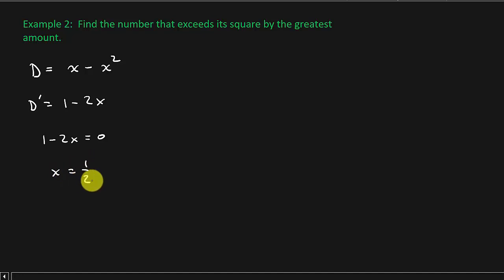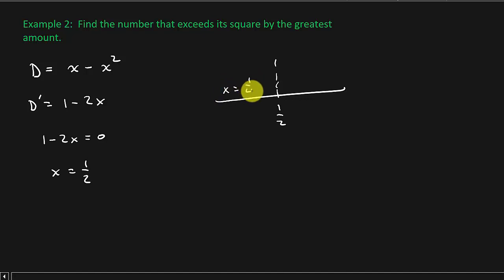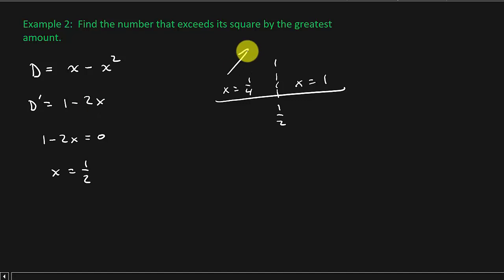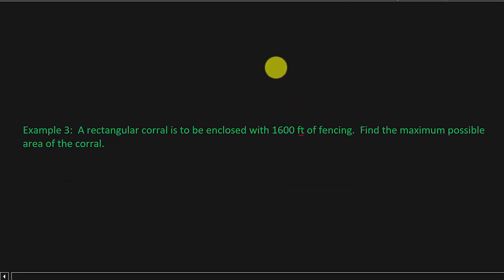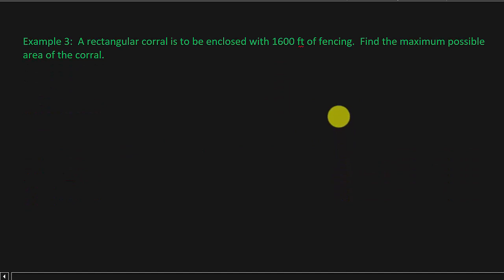That's your answer. We can verify quickly: pick X equals one fourth and X equals 1. Plugging one fourth into the derivative gives 1 minus one half — that's positive. Plugging 1 in gives 1 minus 2 — that's negative. So you can see it's a maximum at X equals one half. That was a quick, easy problem. They're going to get more difficult, so don't worry.